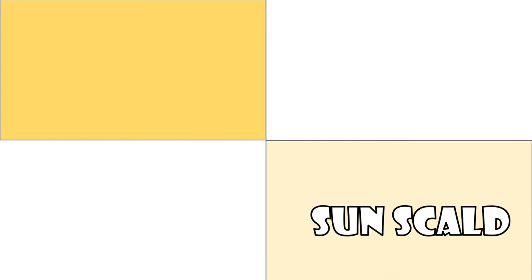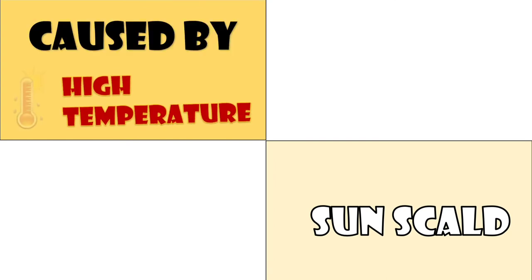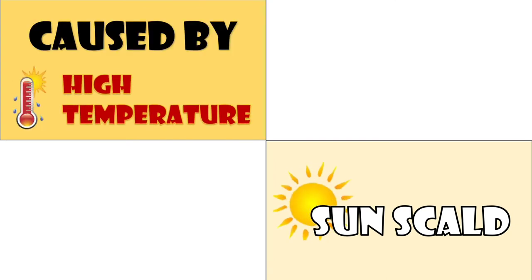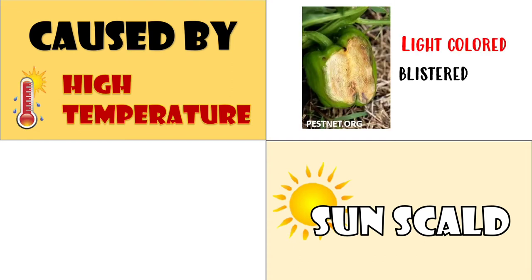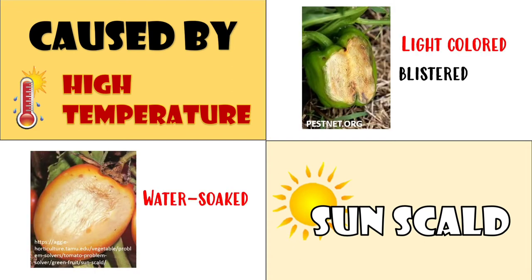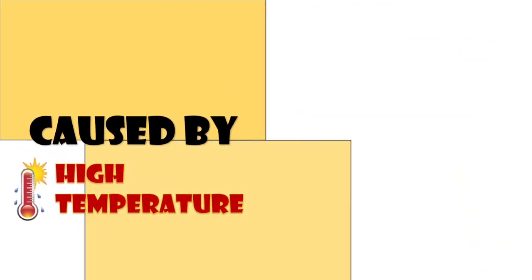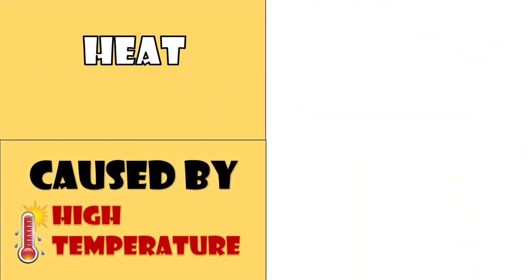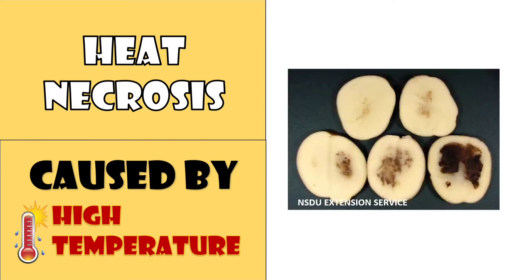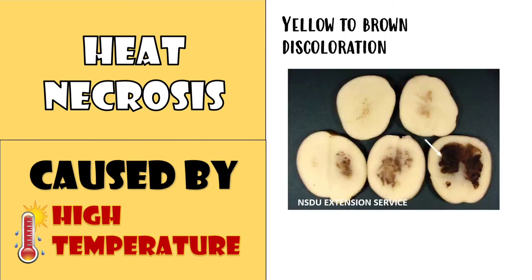The damage from winter burn is from dehydrated plant tissues that occurs during winter when temperatures are frigid and the ground is frozen. Sun-scald results from prolonged exposure to high temperature and bright sunlight. Symptoms include light-colored, blistered, or sometimes water-soaked tissues, and very young leaves often wilt and die. Internal heat necrosis or internal browning occurs in potatoes grown in light soil where it is hot and dry, characterized by a yellow to brown discoloration in the vascular system of the affected tuber.